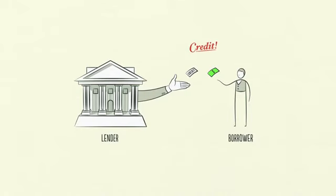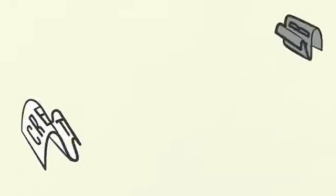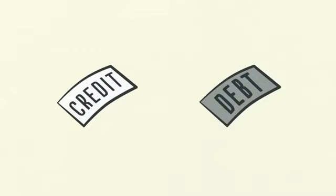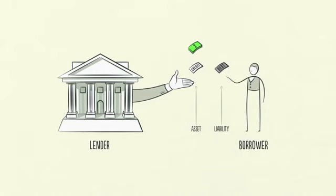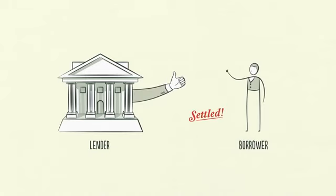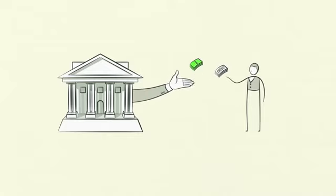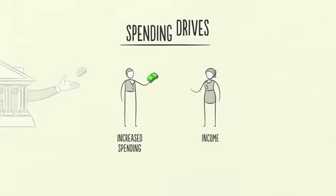Any two people can agree to create credit out of thin air. That seems simple enough, but credit is tricky because it has different names. As soon as credit is created, it immediately turns into debt. Debt is both an asset to the lender and a liability to the borrower. In the future, when the borrower repays the loan plus interest, the asset and the liability disappear and the transaction is settled. So why is credit so important? Because when a borrower receives credit, he is able to increase his spending. And remember, spending drives the economy.